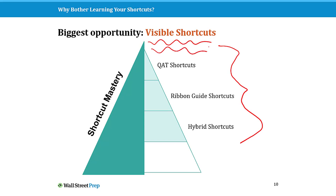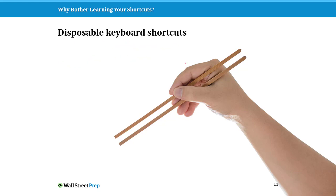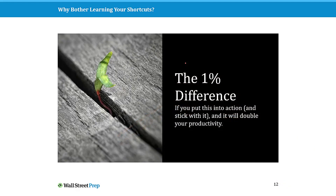There's a top portion of the mountain that most people never get to, which has the benefit of what I call visible keyboard shortcuts. The vast majority of these you do not need to memorize to immediately start taking advantage of them — think of them as disposable shortcuts. As you're working on a project doing a certain task, maybe flipping between your slide master and normal view or doing a bunch of stuff with comments, you can basically pick these up like chopsticks, use them for whatever you're currently doing, and then forget about them until you need them again.